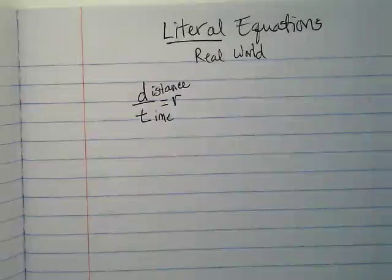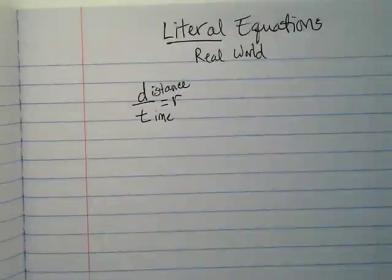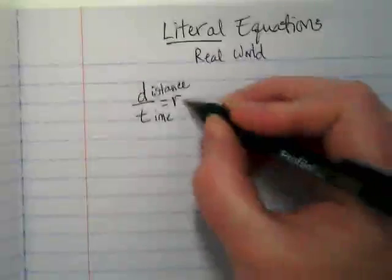If we take the distance that you run in track practice and divide it by the time, we're going to find out how fast you were running, right? That's what the rate is.